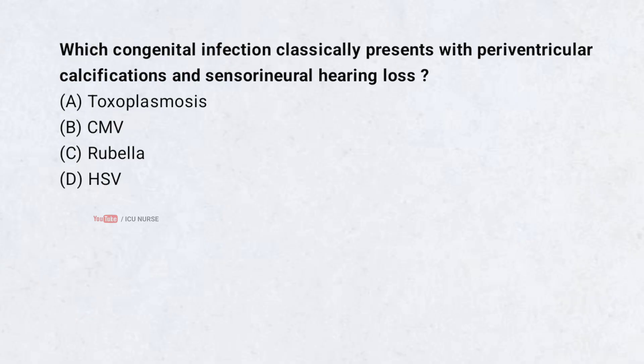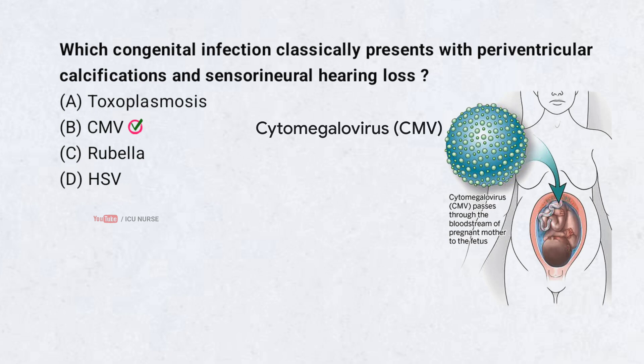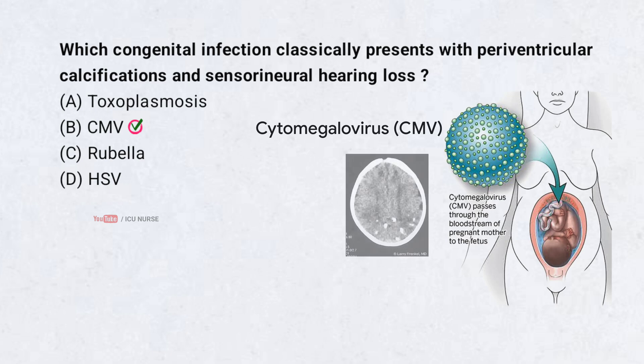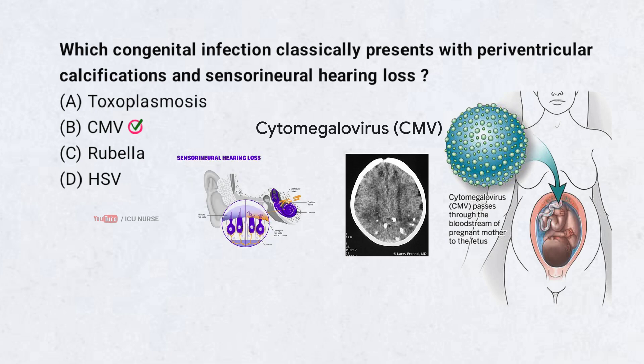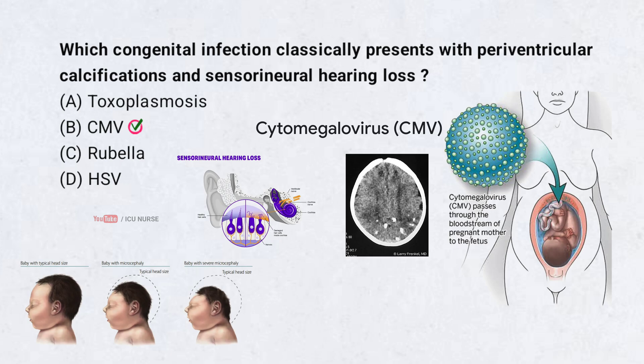Which congenital infection classically presents with periventricular calcifications and sensorineural hearing loss? A. Toxoplasmosis. B. CMV. C. Rubella. D. HSV. Correct answer: B. CMV. CMV stands for cytomegalovirus. Congenital CMV infection is the most common viral cause of birth defects. CMV classically causes periventricular calcifications visible on brain imaging, along with sensorineural hearing loss. Other features include microcephaly, hepatosplenomegaly, and petechiae.